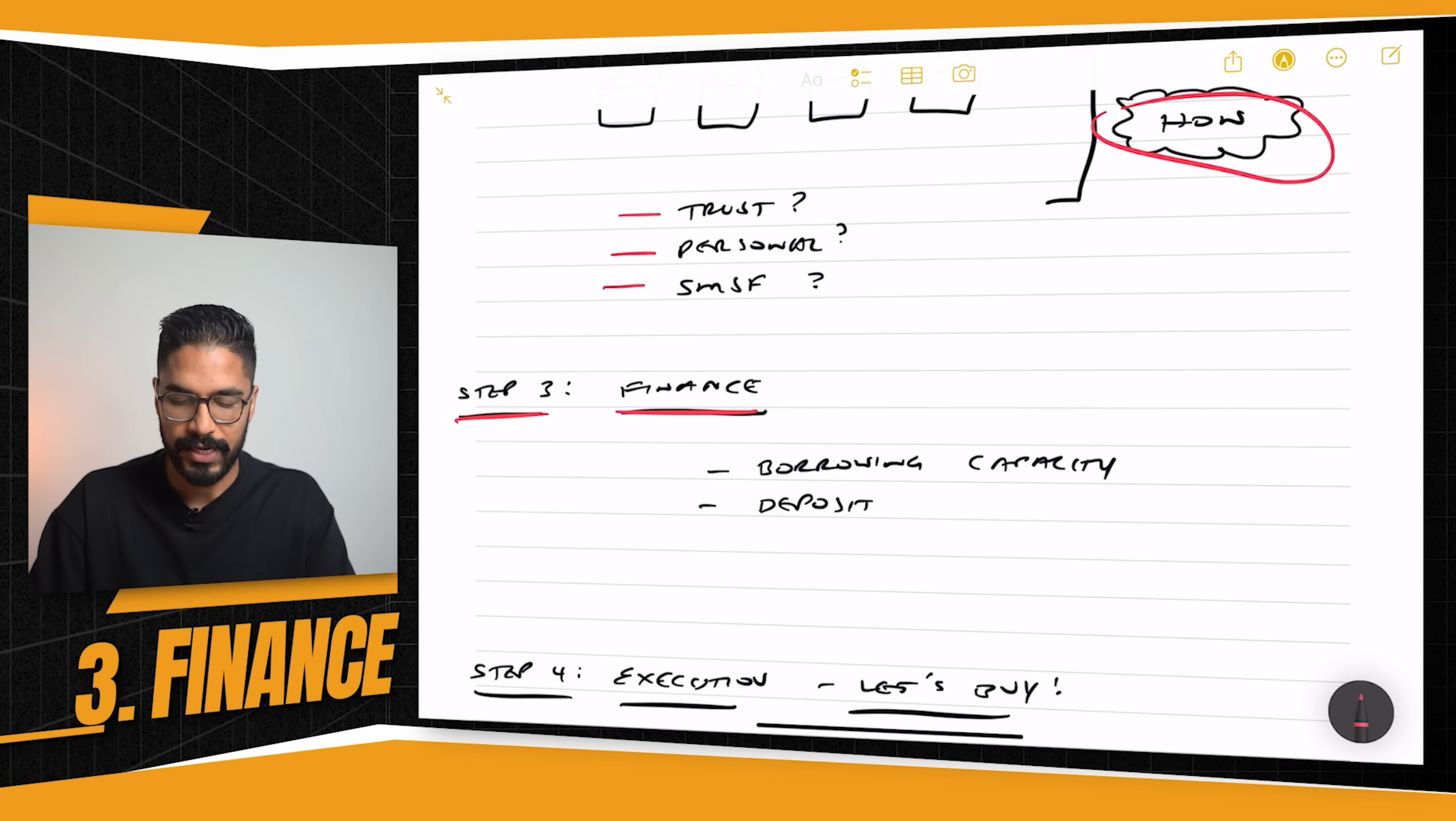The next step here, step three, is finance. Now, we can have the greatest plans in our minds saying, Ravi, I want to buy 12 properties. I love the idea. I can retire early. Great. But we can't do this by ourselves. We need the bank. And I've said this before. The banks are your friend in this whole situation. I know that we're always against them and the media likes to shit on them. But at the end of the day, most people can't afford to buy property without the bank.